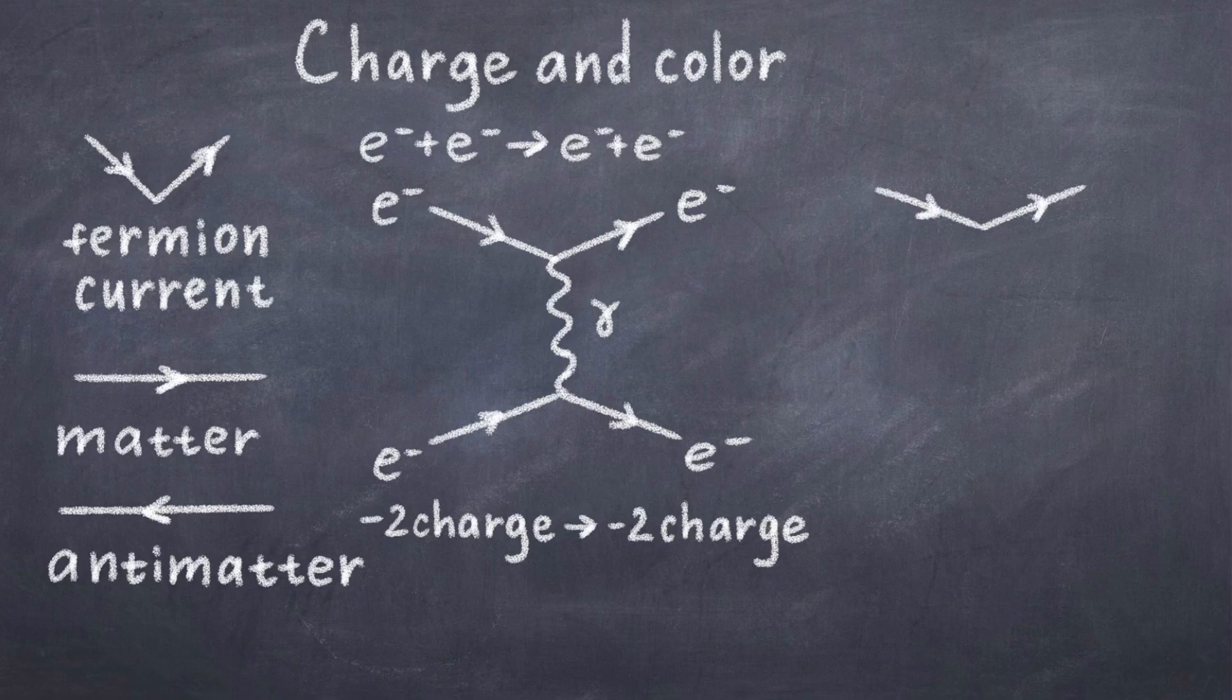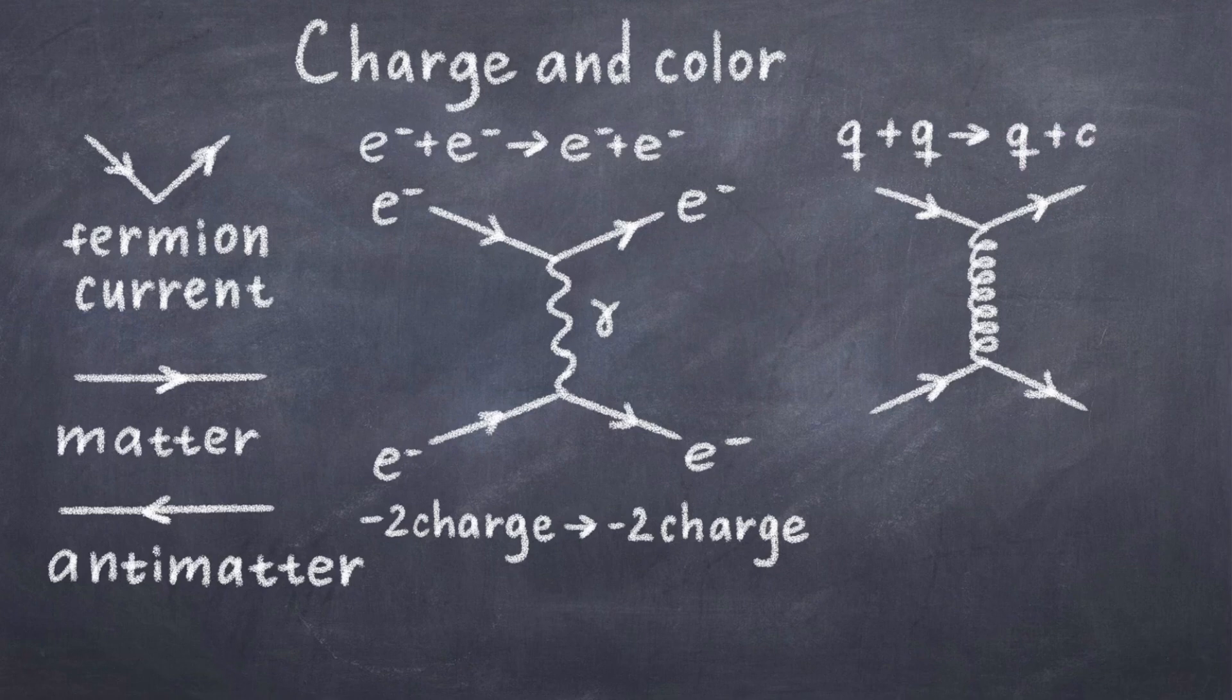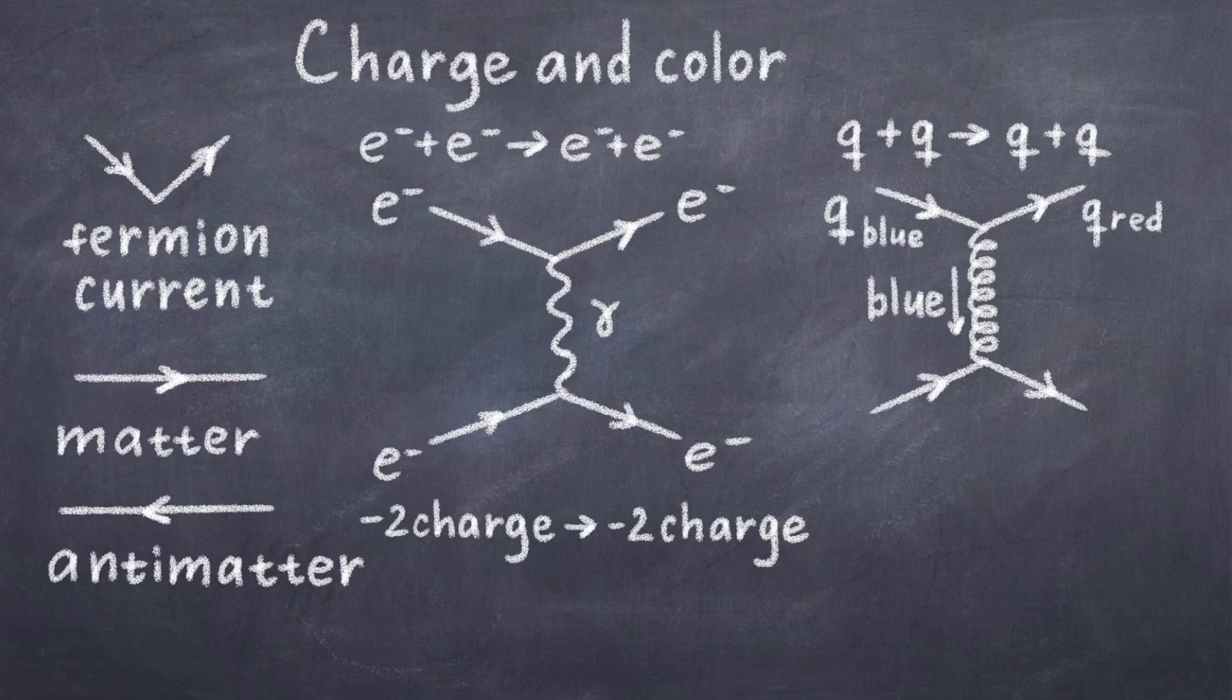Now let us consider the conservation of color. This is sort of a charge associated with the strong force, thus it is only relevant for this force. We have three colors: red, blue, and green, and the anti-colors of that. Only quarks have color. So we can consider the case with two incoming quarks, which interact via a gluon. Let's say one quark has a blue color, and the other has a red color.